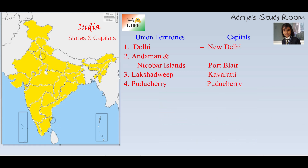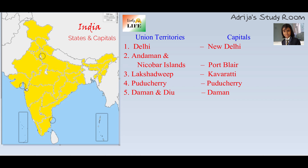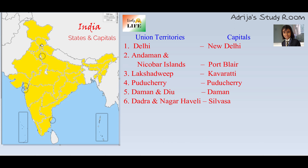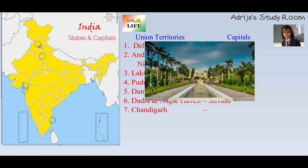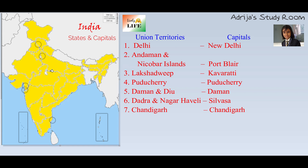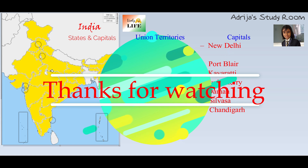This union territory is Daman and Diu, and its capital is Daman. And this one is Dadra and Nagar Haveli, and its capital is Silvassa. And this union territory is Chandigarh, and its capital is also Chandigarh. Now we know the states and union territories of India. I hope this video was helpful. If you liked it, click the like button, and to stay with me, please click the subscribe button. Thank you.